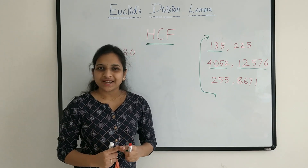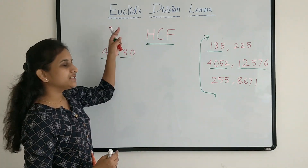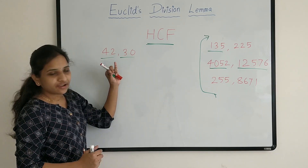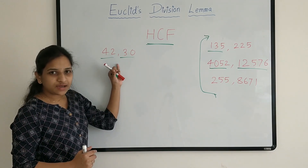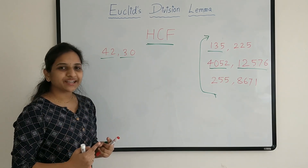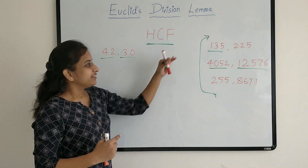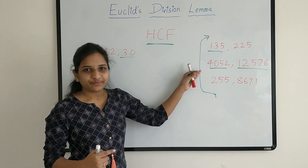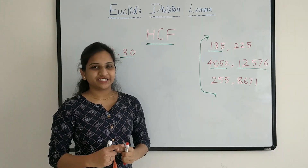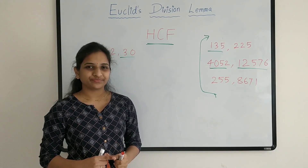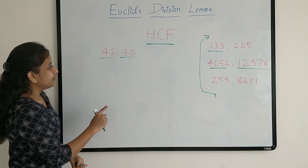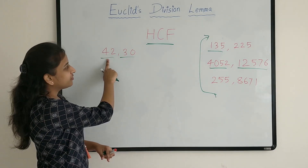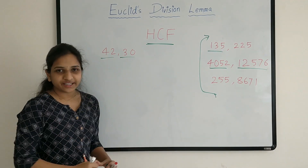Now let's understand what this method is. Let's understand it for small numbers first — once our concepts are clear, we can apply the same method to find HCF of big numbers. Now I am finding the HCF of 42 and 30.